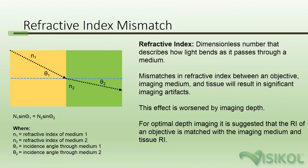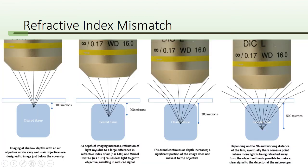Another important imaging parameter to understand is the concept of refractive index mismatch. As light passes from one medium, such as air, with one refractive index, to another medium, such as water, with a different refractive index, it will cause the light to refract. The severity of this effect is dependent upon the degree of mismatch between the two mediums. When imaging tissues, it is very important to minimize refractive index mismatches, as this will cause imaging artifacts which increase with depth. Microscope objectives are designed to perform at specific refractive indices and are matched to common mediums such as air, water, glycerol, or oil. Some objectives have correction collars so they can be used with many different refractive indices.